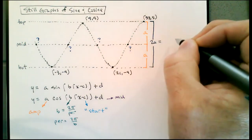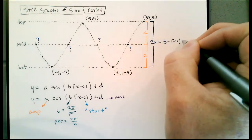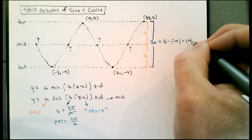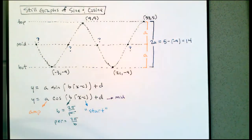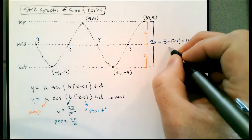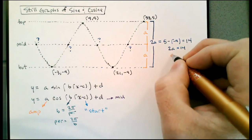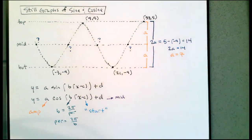To find that distance I take the top and subtract the bottom: 5 minus negative 9 is 14. So I know what 2A is. Since 2A equals 14, we can figure out that A must equal 7. So my amplitude is 7 — one of the four things that I need.